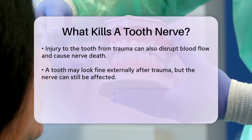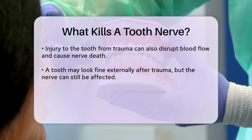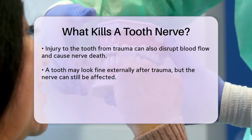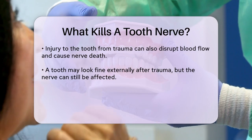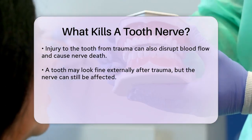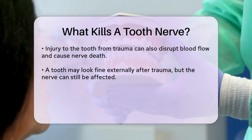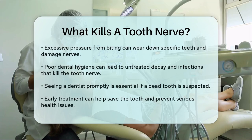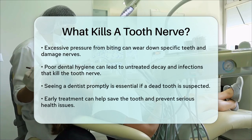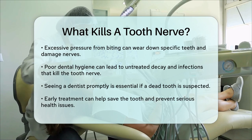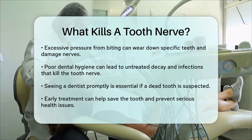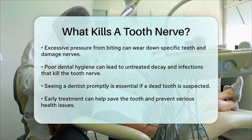In some cases, the pressure from your bite can also cause a tooth nerve to die. If most of the pressure of your bite is concentrated on just one or two teeth, it can wear them down more than others and potentially cause nerve damage. It's also worth noting that poor dental hygiene can contribute to a dead tooth, as untreated tooth decay and other dental issues can lead to infections that kill the tooth nerve.